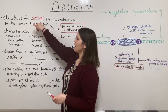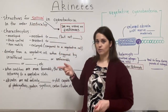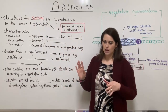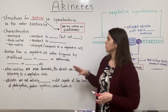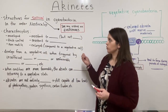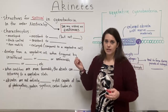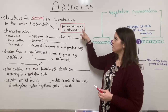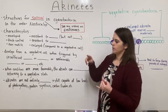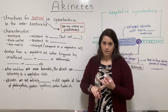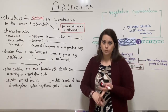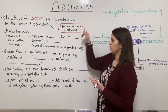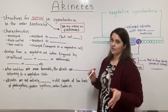You might be hearing 'survival structures' and thinking this sounds like endospores, and you're right to make that connection. However, akinetes are not endospores — they're not the same thing. Endospores are those survival structures formed by gram-positive bacteria in the Bacillus and Clostridium genera. There are many videos on endospores covering what they are, the sporulation process, and the endospore stain, so check those out if you're learning about endospores.